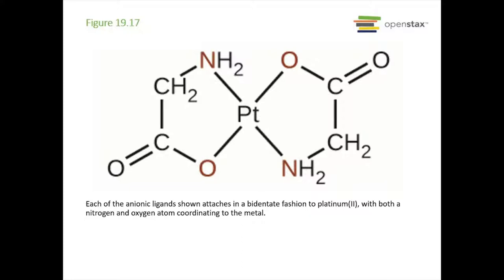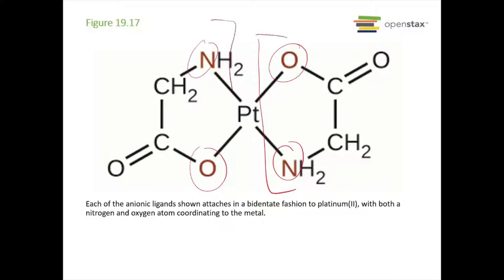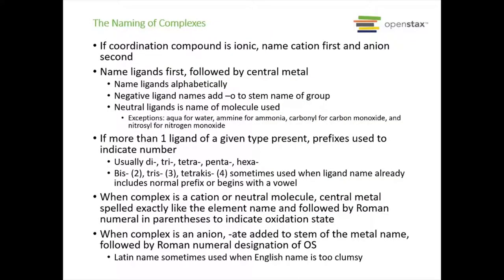Here's another example: platinum with two anionic bidentate ligands. Each ligand has an oxygen and a nitrogen coordinating to the platinum — so you have two separate bidentate ligands on this complex. That reminds me, I need to call my dentist — I think it's time for a cleaning.